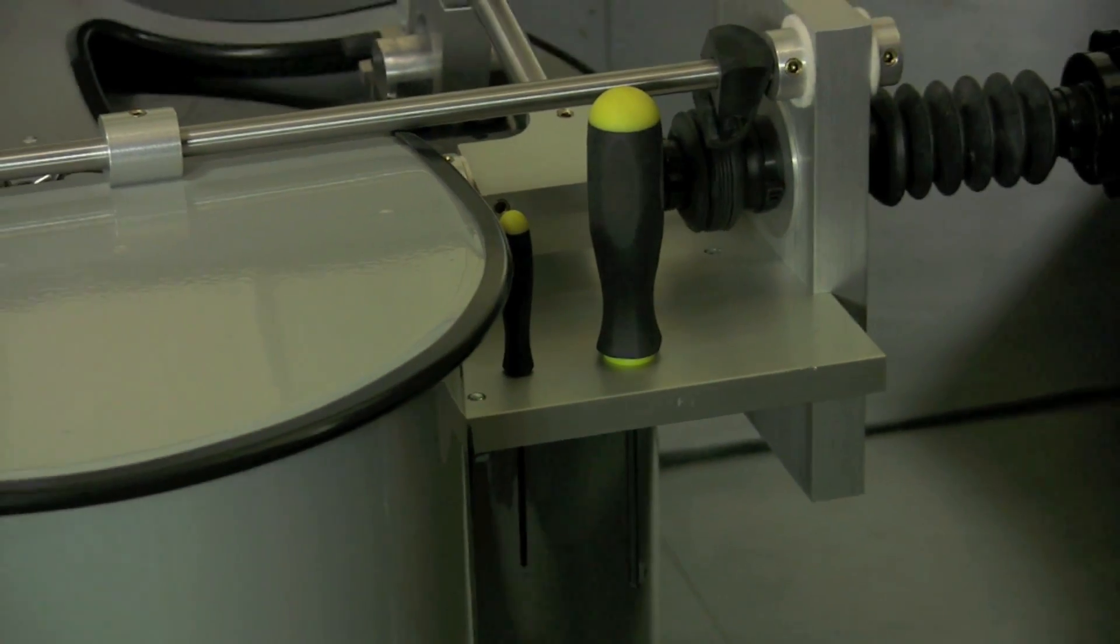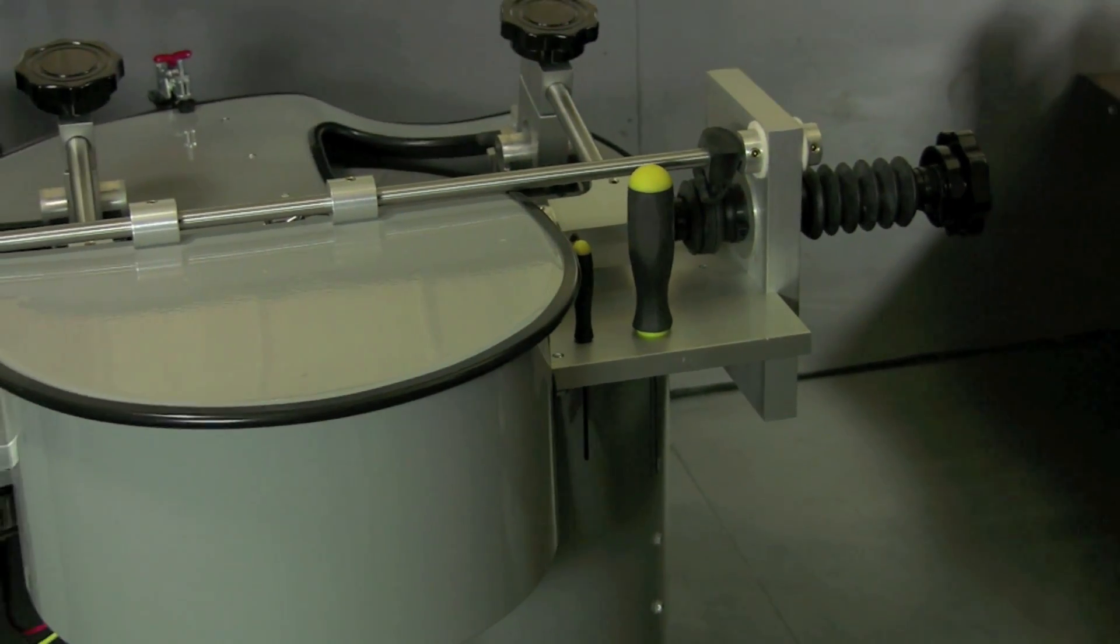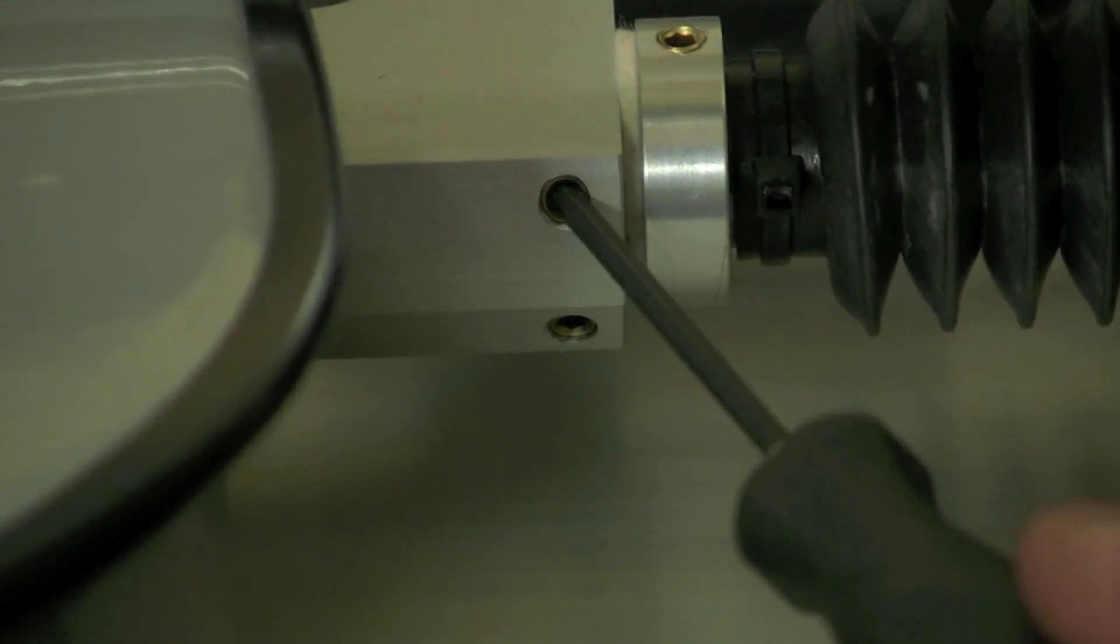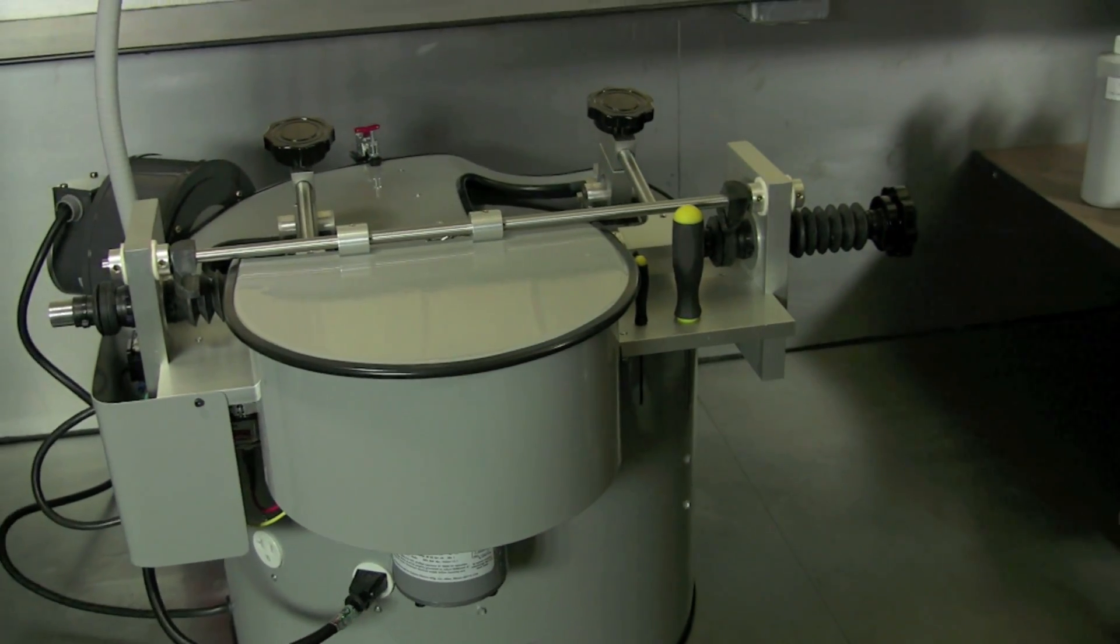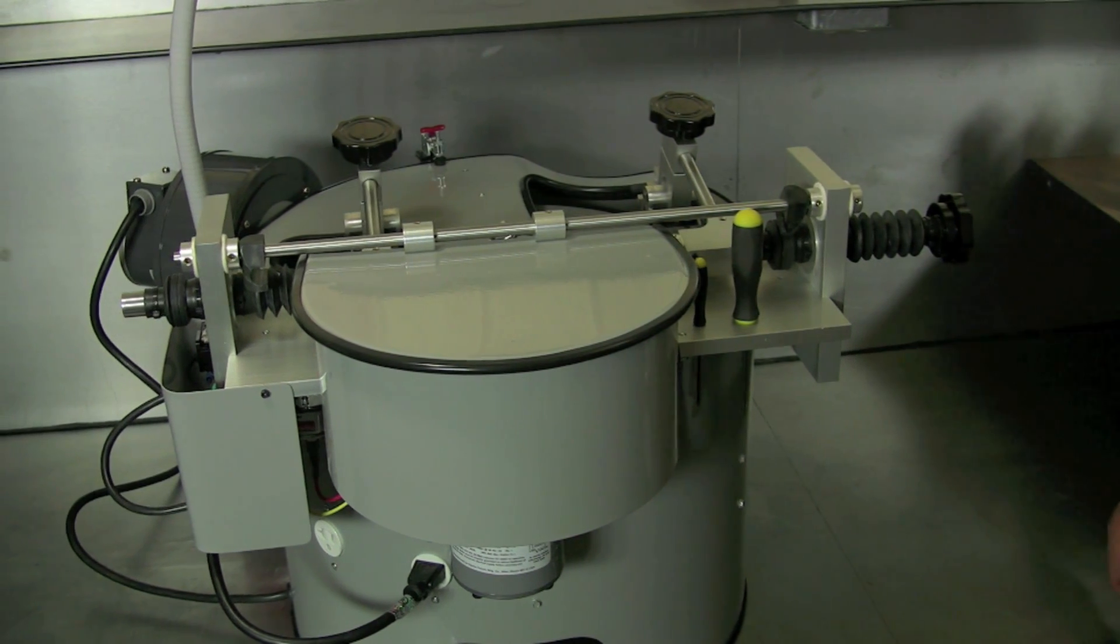Included with the machine are two allen wrenches, which are used for making minor adjustments to the pivot points and also for changing the stroke when going from the small blades to the large animal blades.